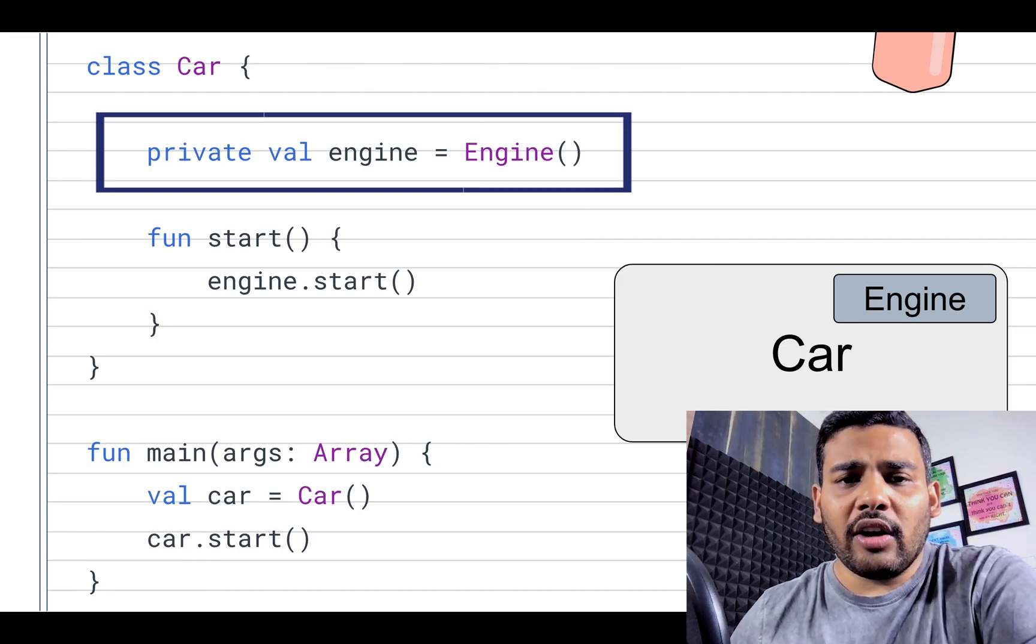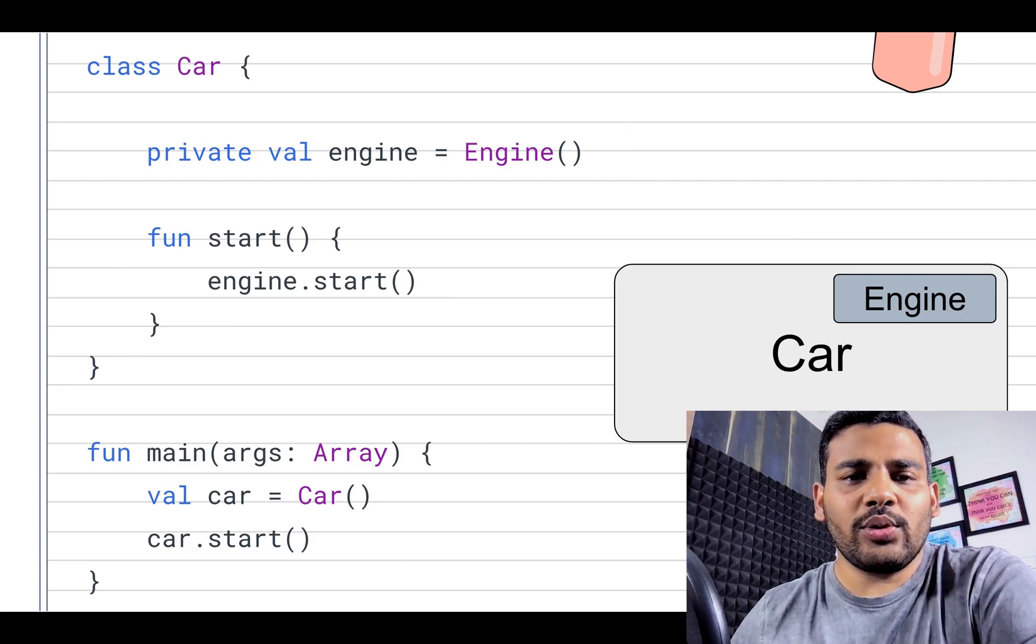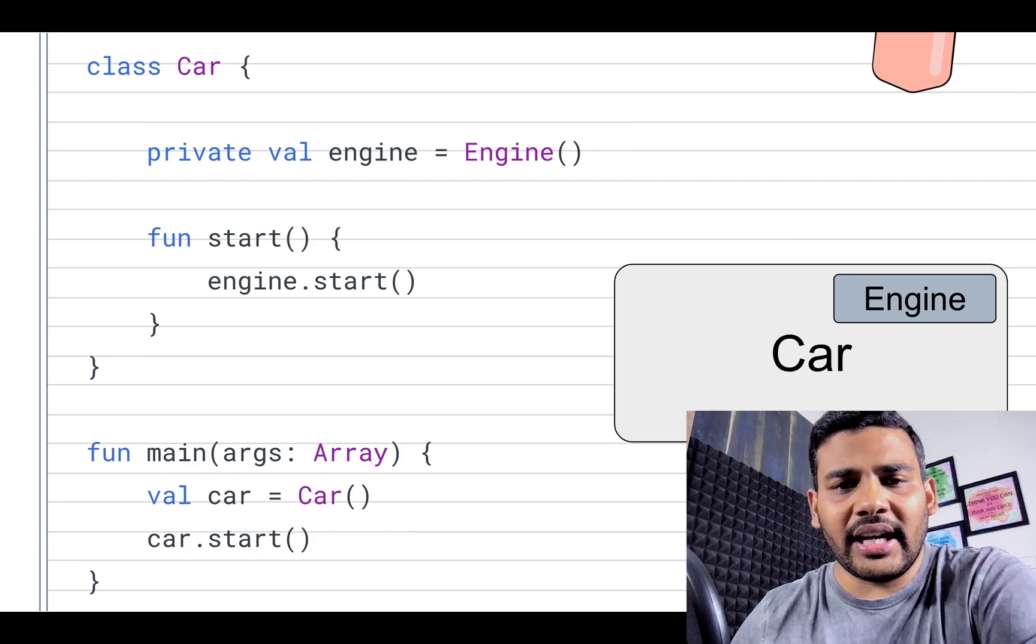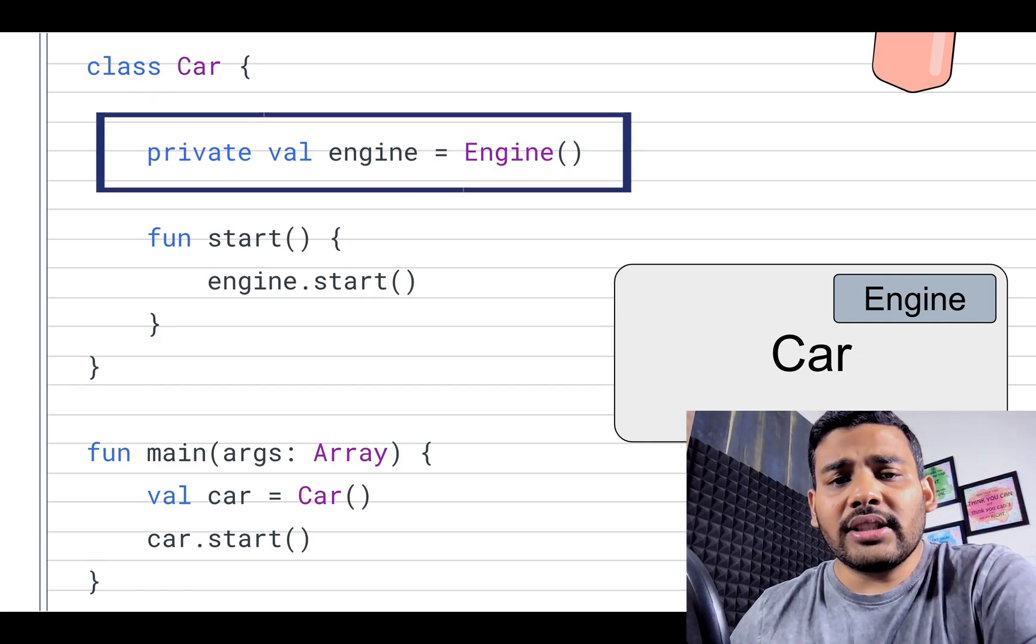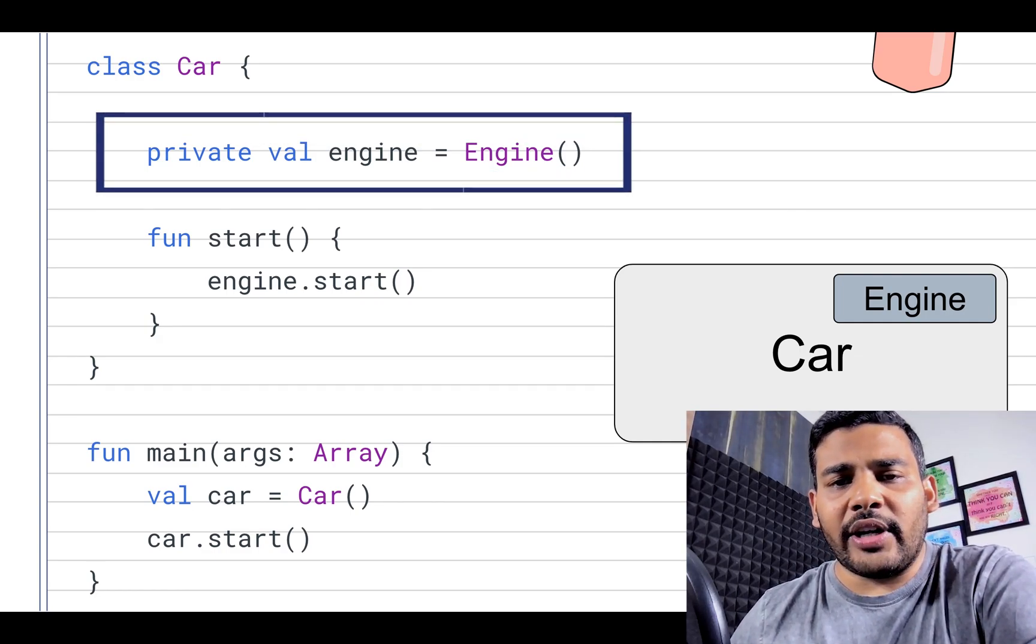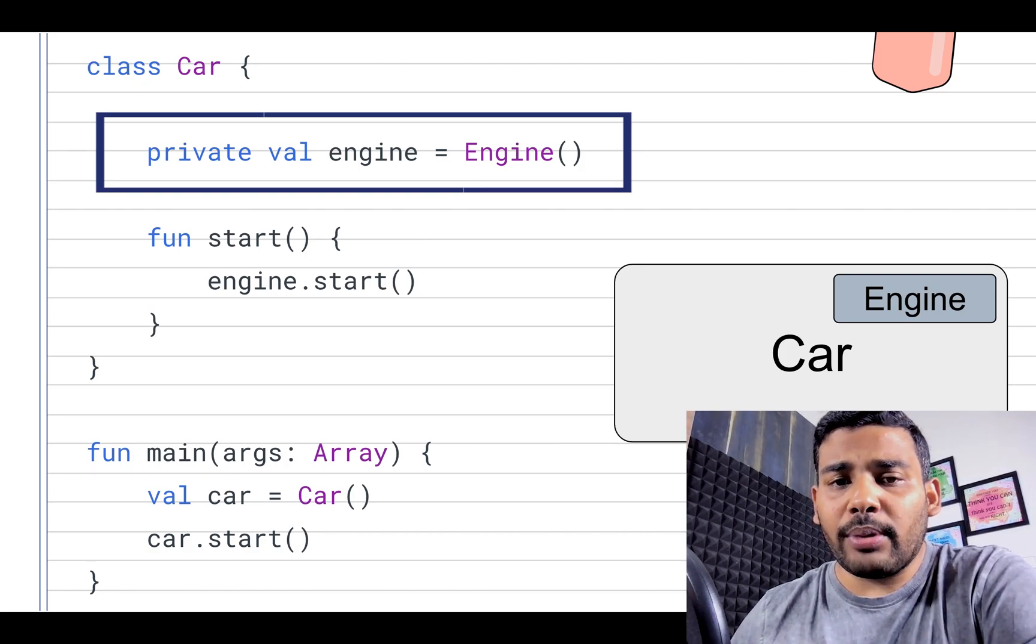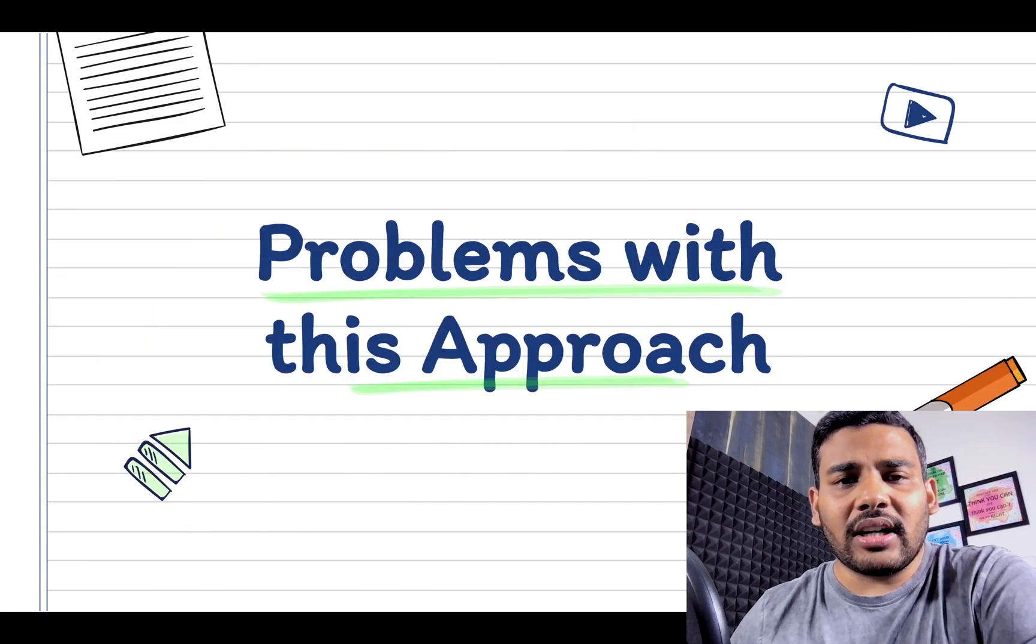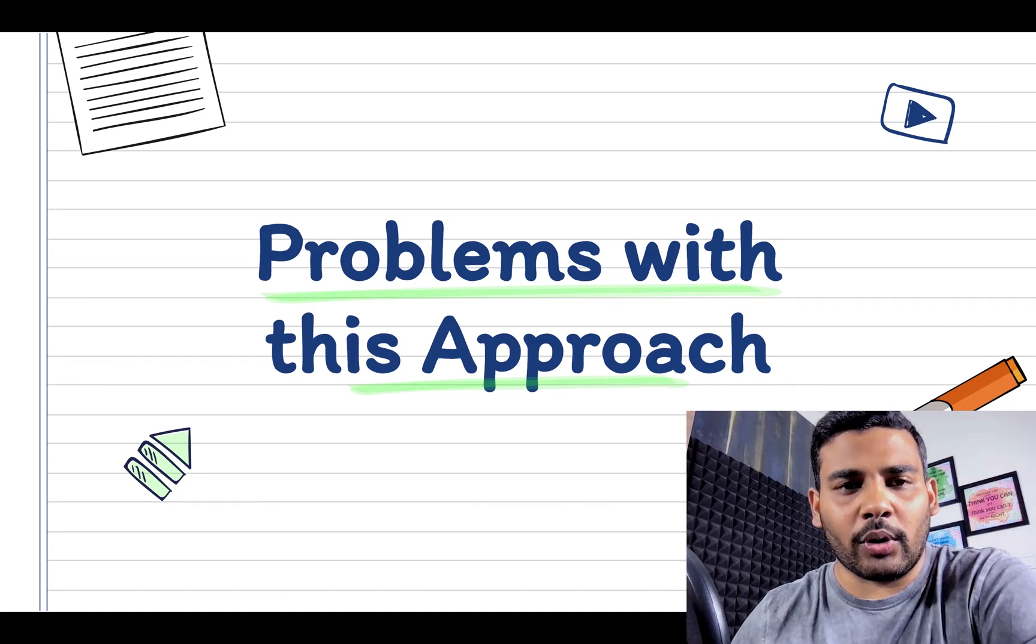Now in this case, Engine is a dependency for Car. That means Engine is needed to construct Car. In this code we are not using any dependency injection concept, as you can see the class Car itself is constructing the Engine. The code is okay, it works and we don't see any problem here, right? But there are many problems with this approach. So let's understand what are the problems that we have with this approach.